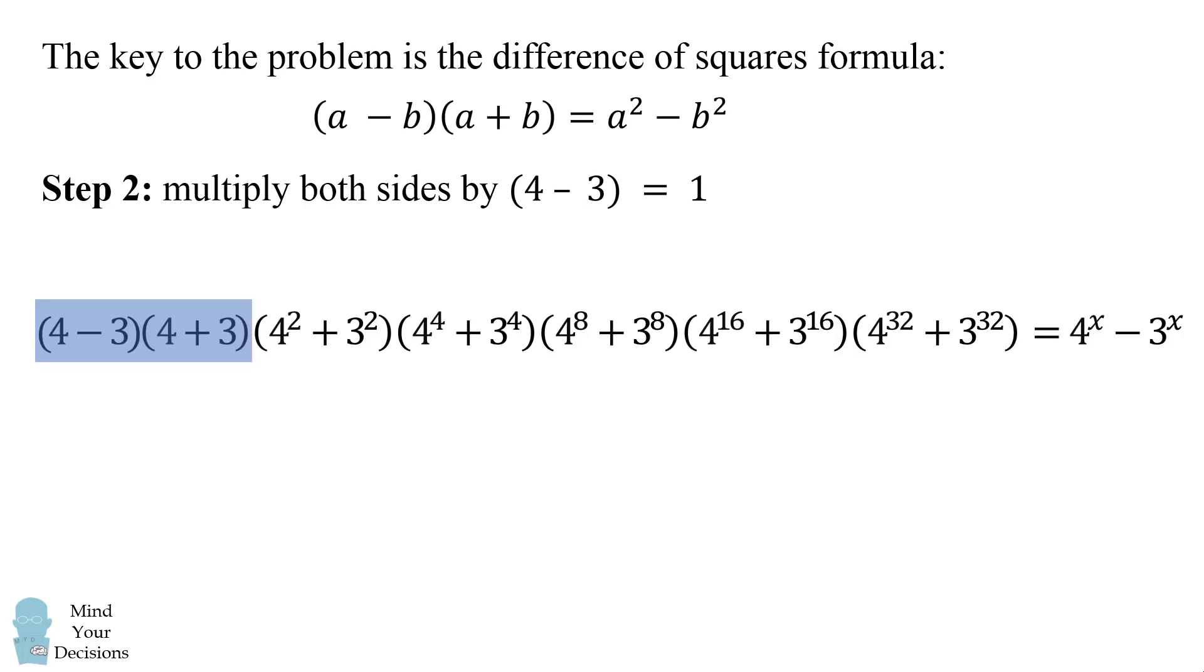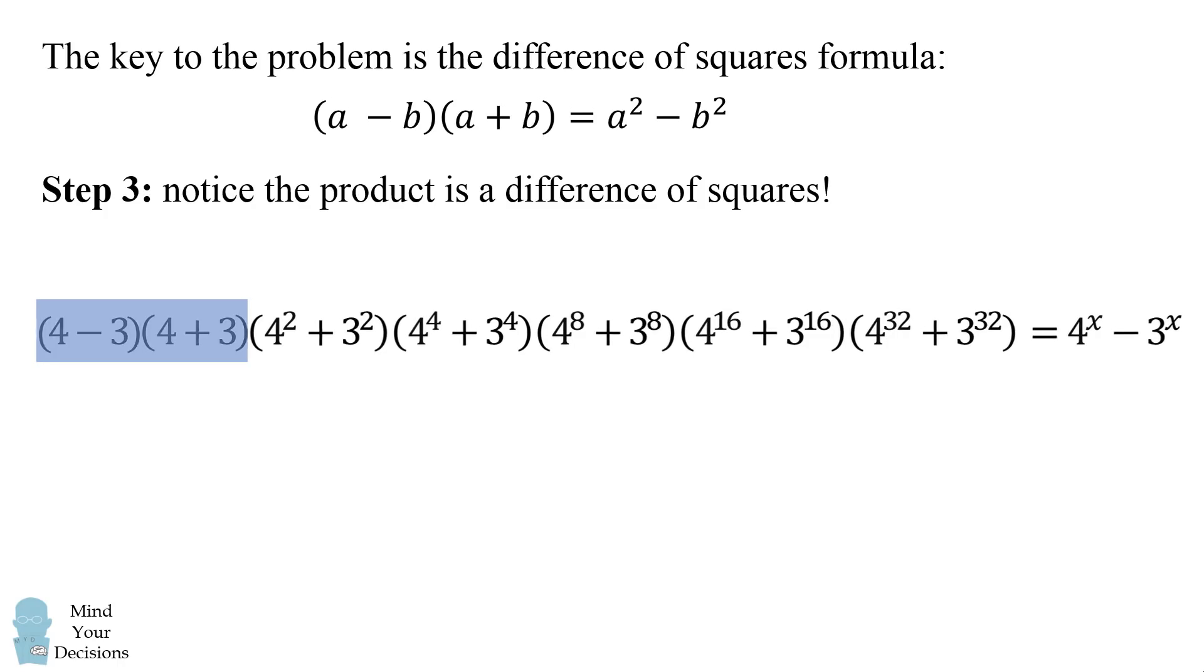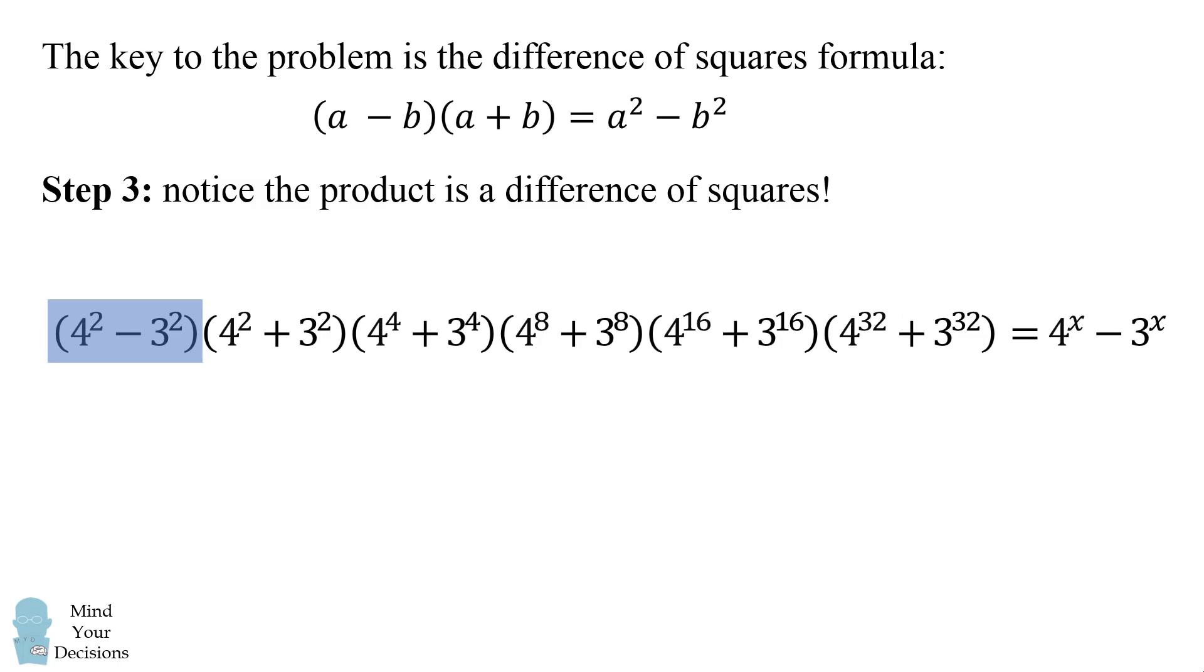If you look at the first two terms, the quantity 4 minus 3 times the quantity 4 plus 3, notice this product is a difference of squares. So this simplifies to be 4 squared minus 3 squared.